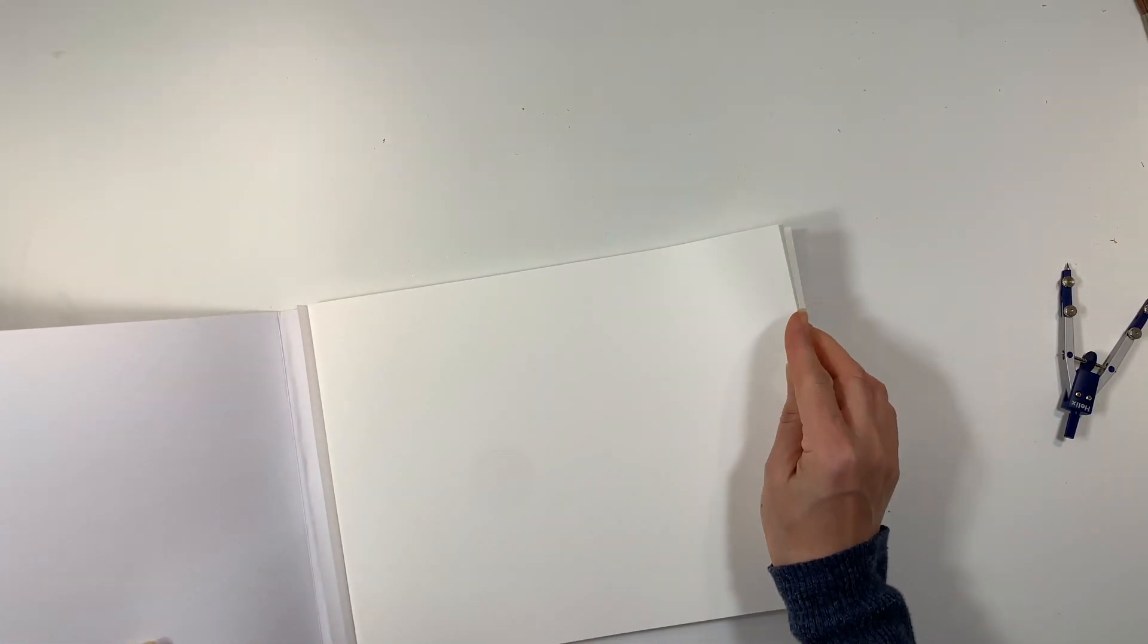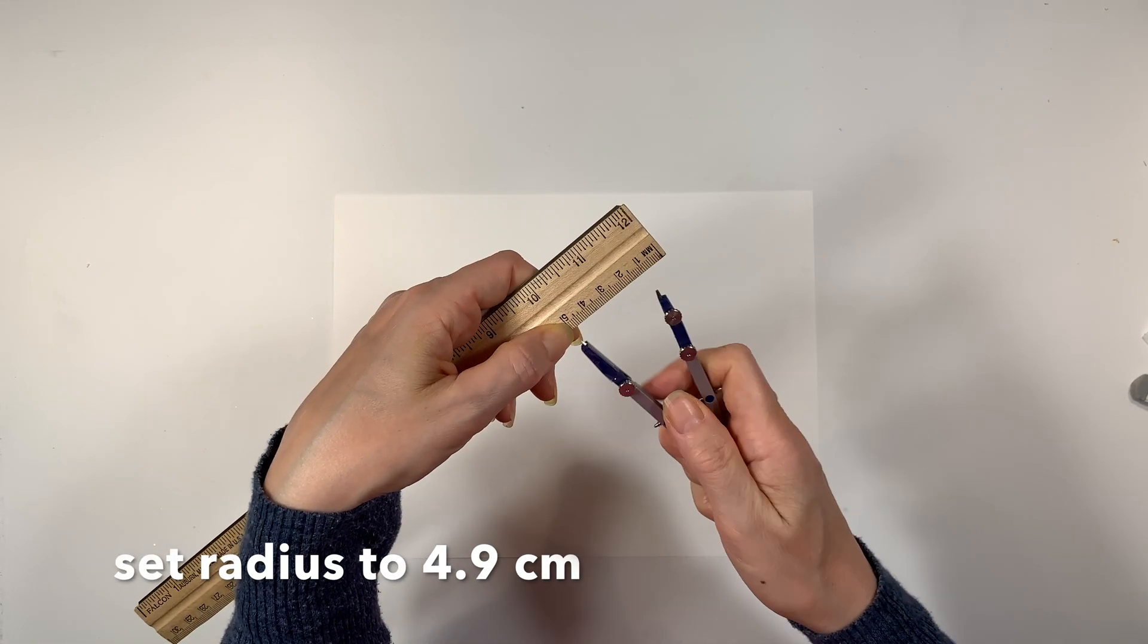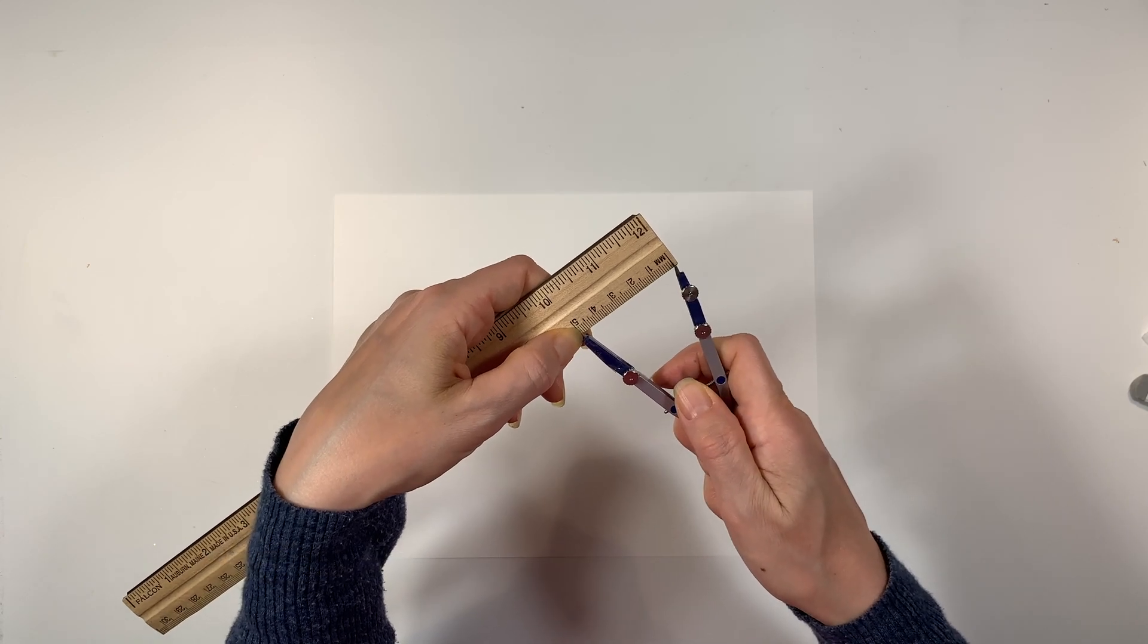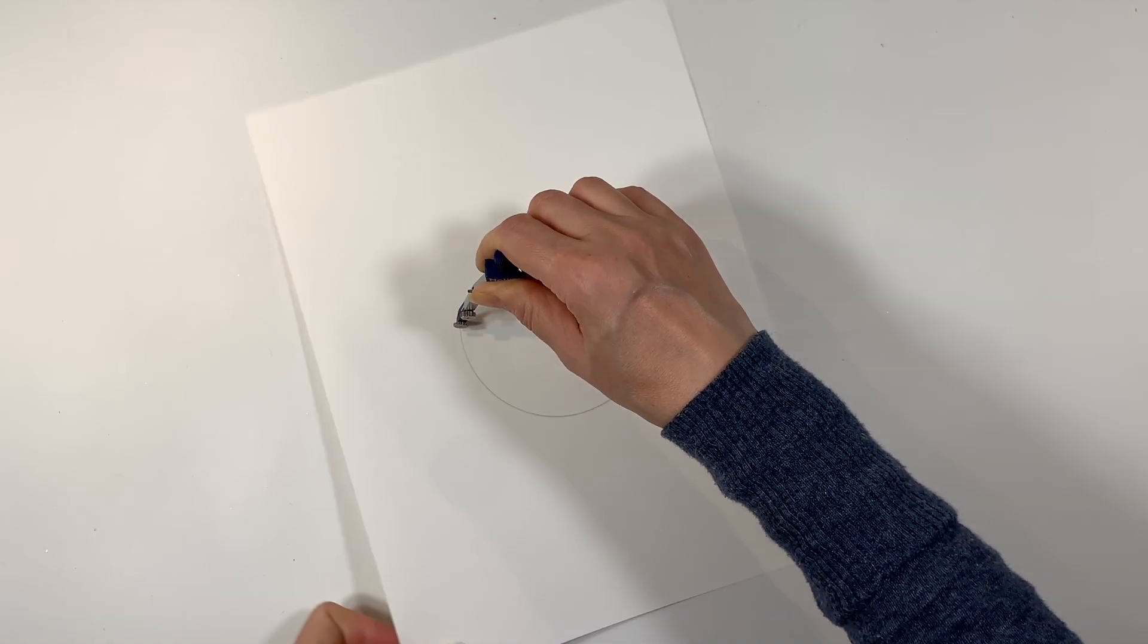For this project I am using my Fabriano hot press watercolor paper, this is 9 inches by 12 inches. The first thing I'm going to do is set my radius to 4.9 centimeters, and we're going to be using a chart that's in the book, so it's really important that we have our radius set exactly right.